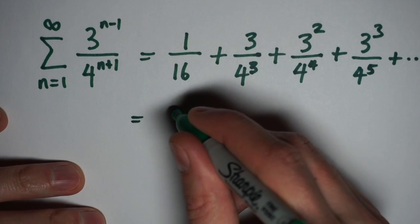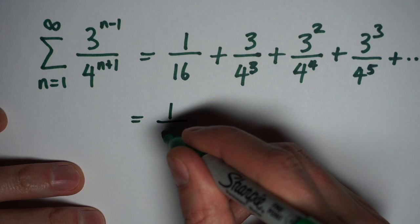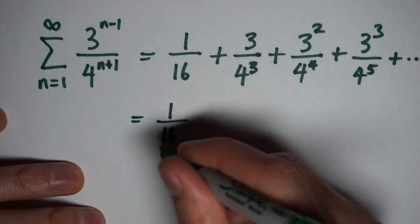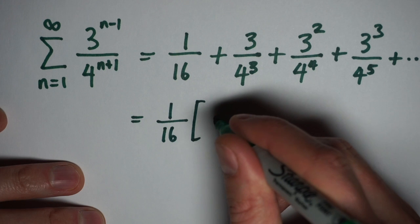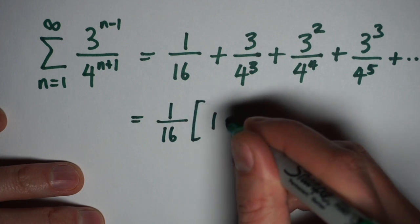In order to find the sum, I'm going to take the common factor, which is my first term. It's 1 over 16, and I'm going to factor it out of everything. So if I take a 1 16th out of everything, my first term is going to be 1.